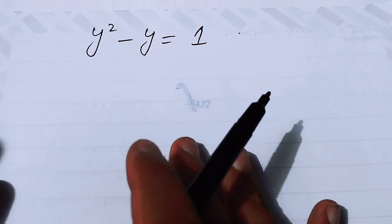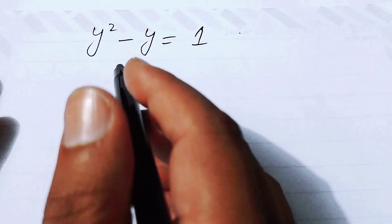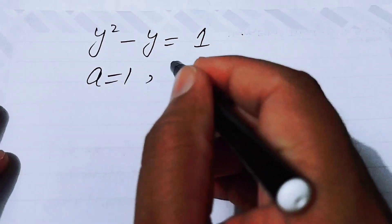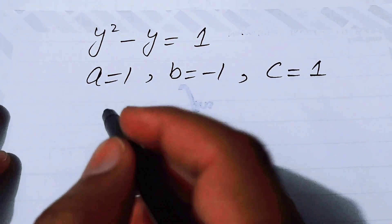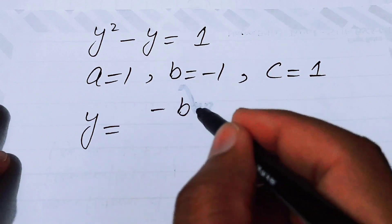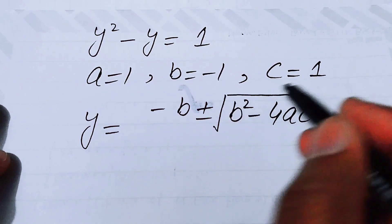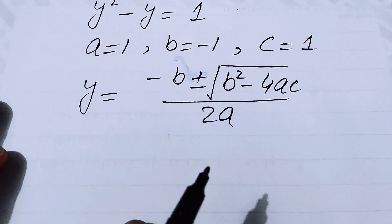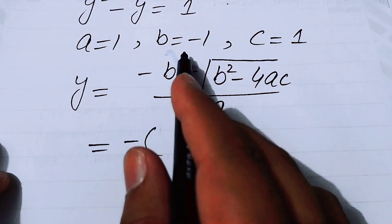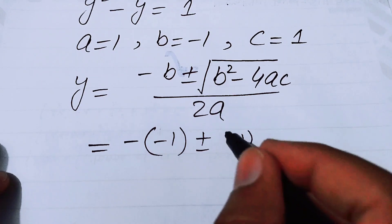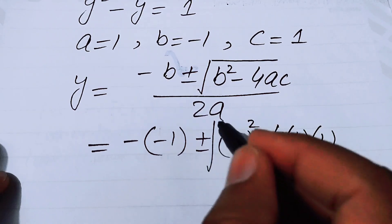We solve this quadratic equation using the quadratic formula. Rearranging gives y² minus y minus 1 equals 0, so a equals 1, b equals minus 1, and c equals minus 1. The quadratic formula is y equals (−b ± √(b² − 4ac)) over 2a. Substituting in: (1 ± √(1 − 4·1·(−1))) over (2·1).